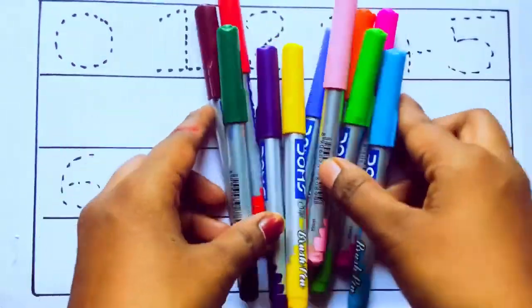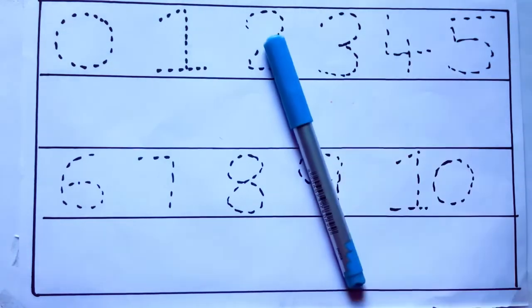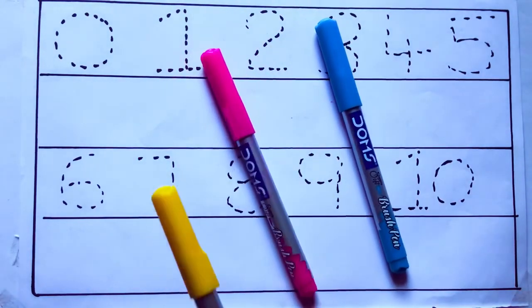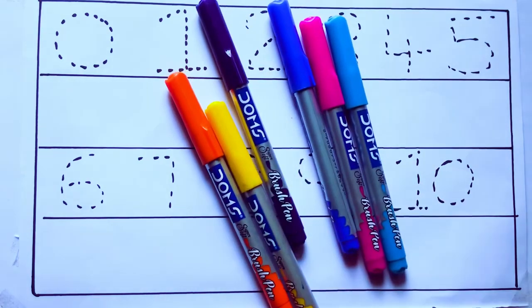Let's learn some colors. These are all the color pencils. Let's learn the names. Sky blue color, pink color, yellow color, orange color, violet color, blue color.